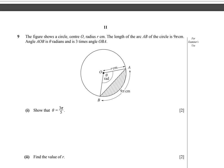Question 9. In question 9, a circle is given with radius r cm. The length of arc AB is 9π cm, the angle AOB is θ radians and is 3 times the angle OBA. In the first part of the question we have to show that the value of θ is 3π over 5.